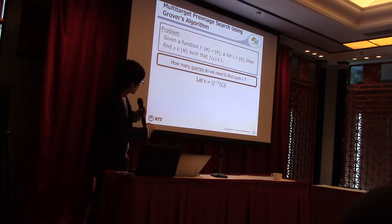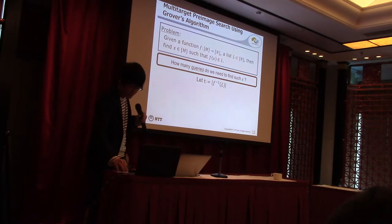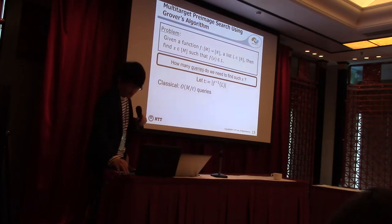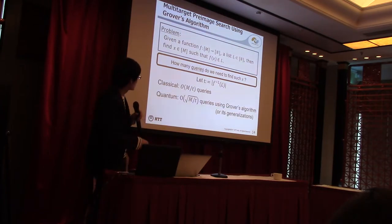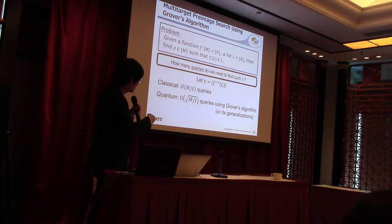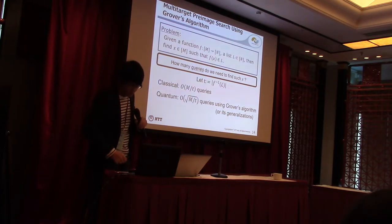Let t equal the size of f inverse of L. Then, in the classical setting, we need order |domain|/t queries to find such x. But using Grover's algorithm or its generalizations, we can find such x with order square root of |domain|/t queries. These are the background.